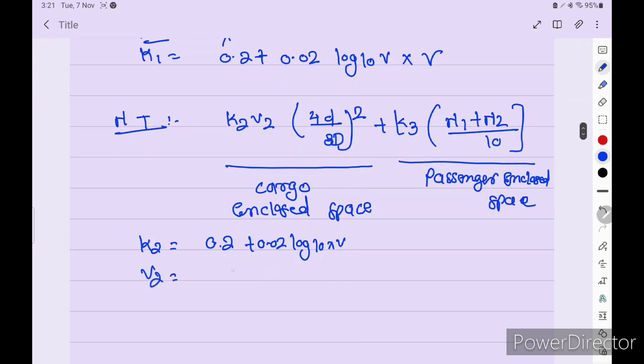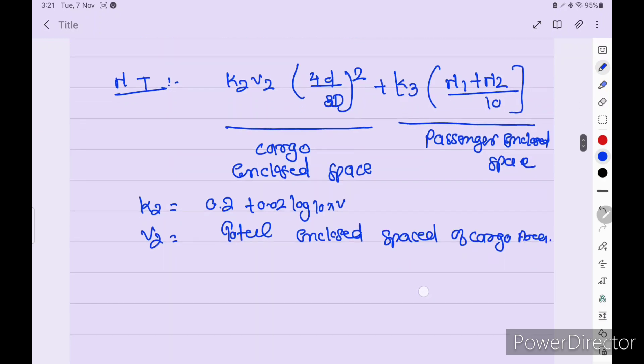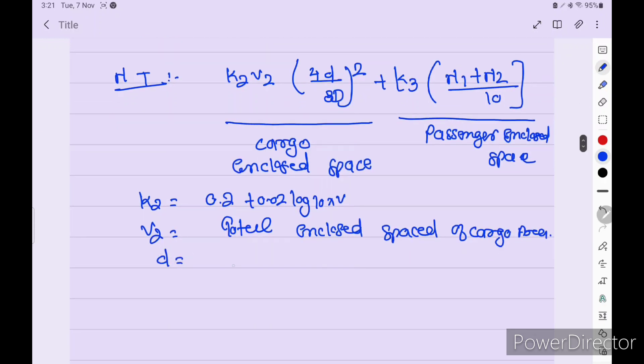V is enclosed space of cargo. V2 is equal to total enclosed space of cargo area. Small d is draft of the vessel, and capital D is depth of the vessel.